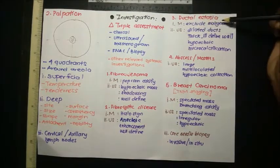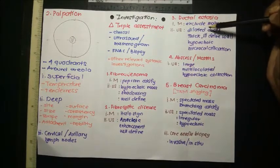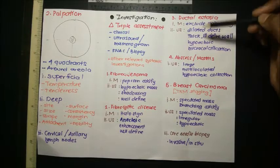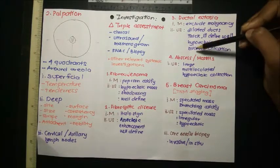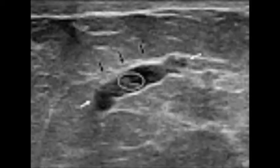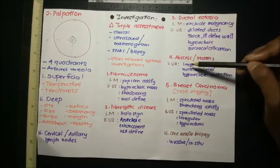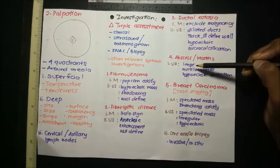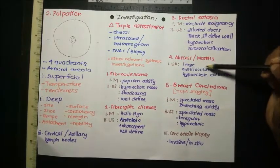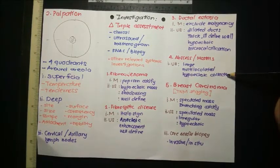For ductal ectasia, mammogram is done to exclude malignancy; ultrasound shows a dilated duct with thick, ill-defined walls — a hypoechoic mass with microcalcification. For abscess and mastitis, mammogram cannot be performed due to pain, so ultrasound is done only, showing a large, multiloculated hypoechoic collection.